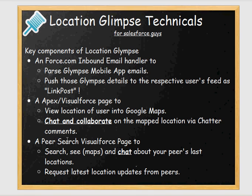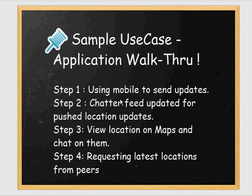We also have a peer search Visualforce page — our third component — that allows users in the org to search for colleague locations and chat about them. For example, user A can search for the locations of user B and even request the latest location update from them. The demo covers four steps: sending a mobile update to Salesforce, viewing the Chatter update, seeing the location on maps and chatting, and using the peer search page.